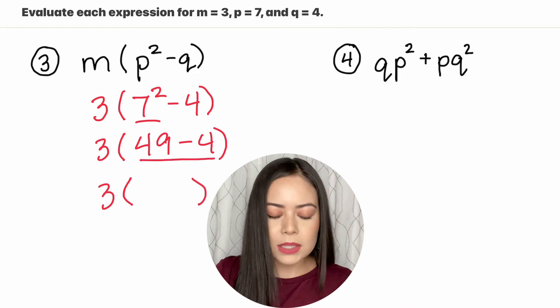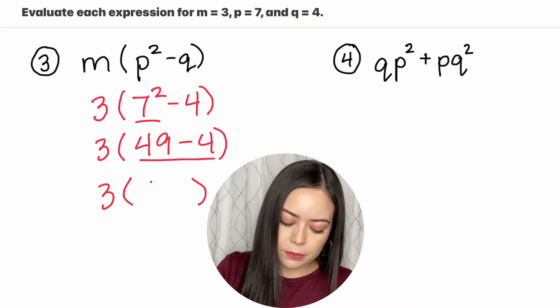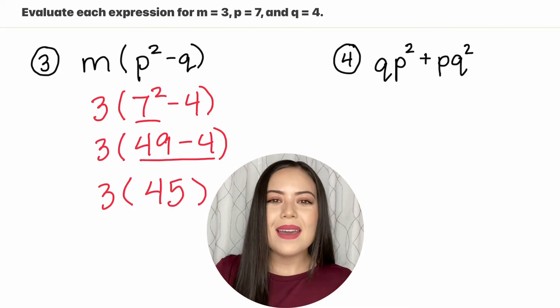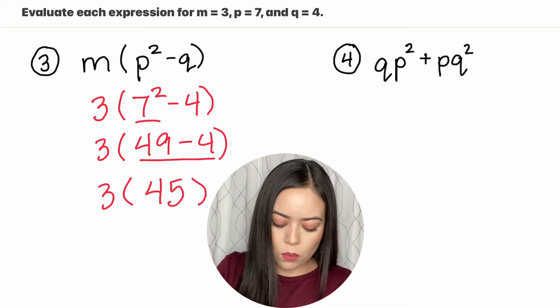49 minus 4 is 45, and 3 times 45 is 135.